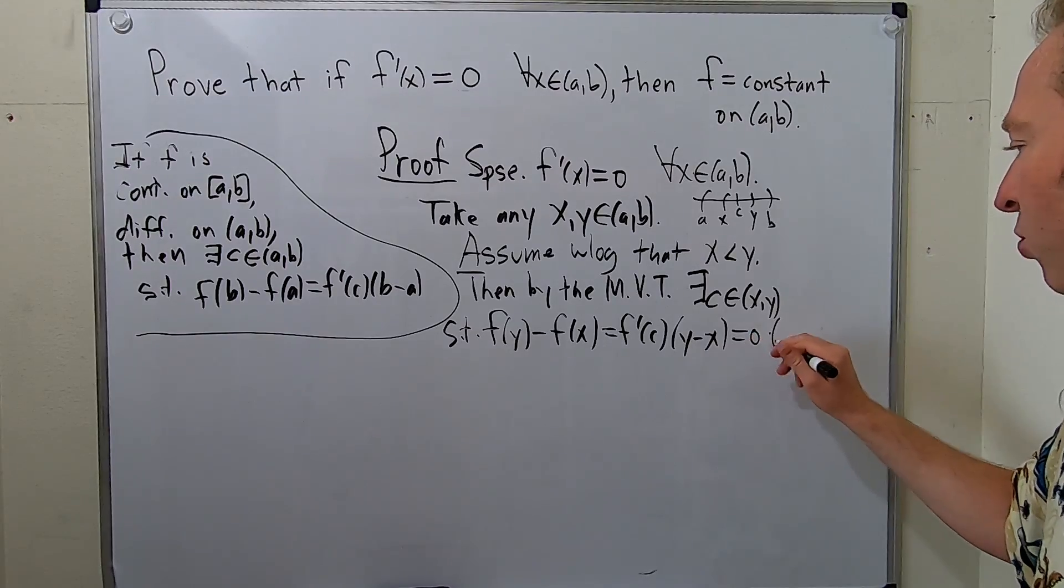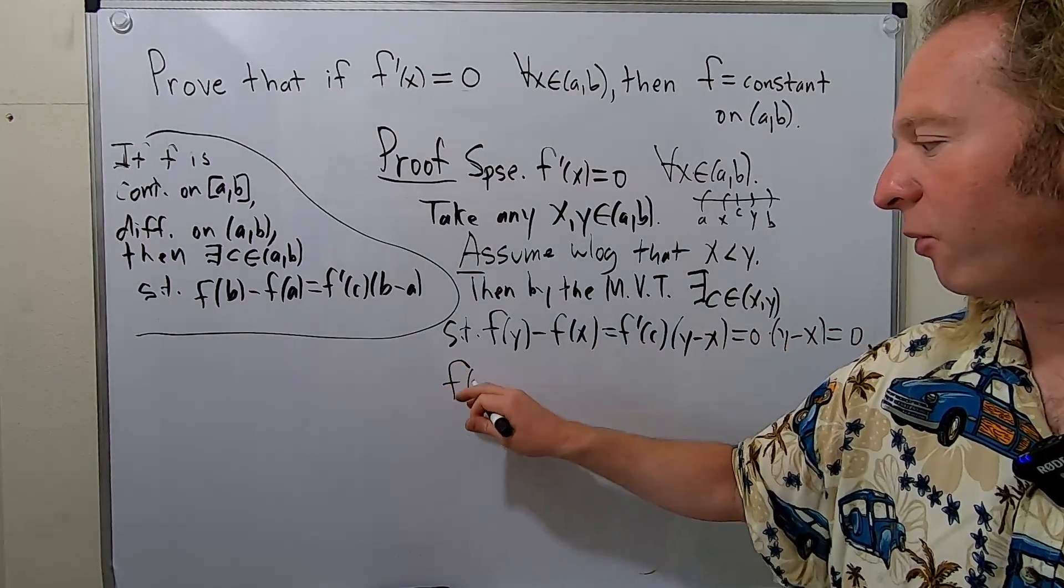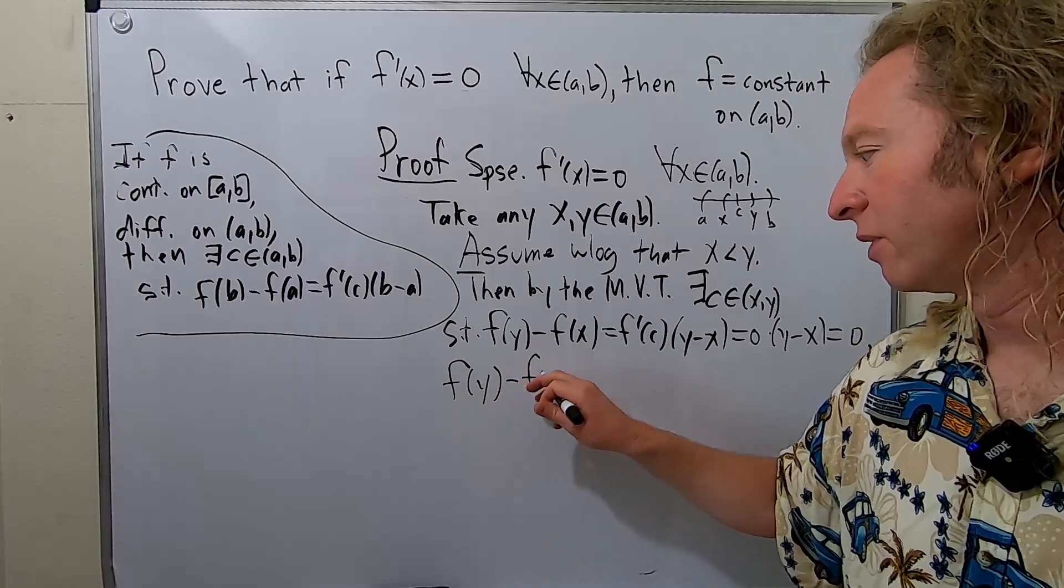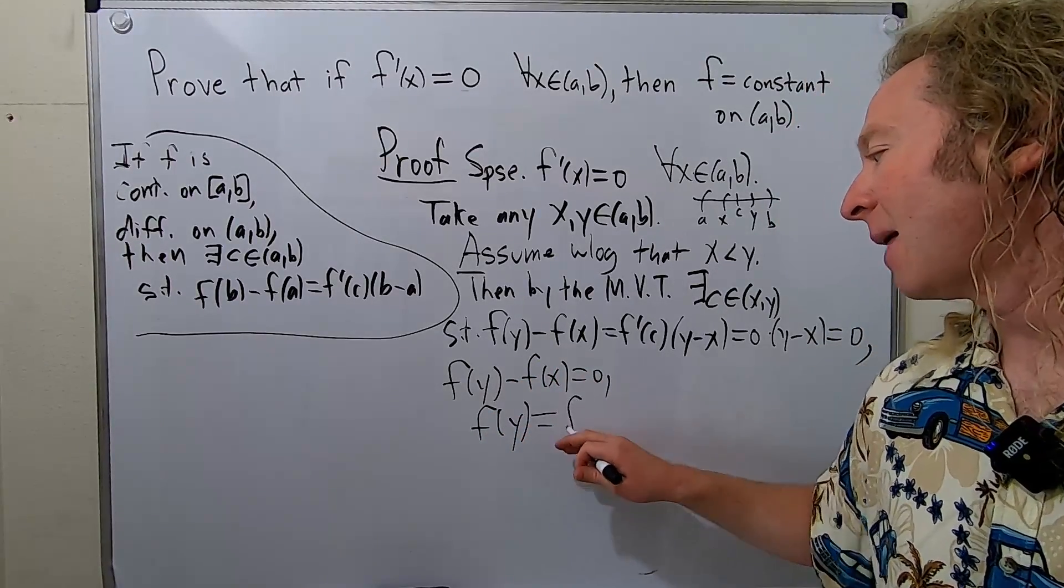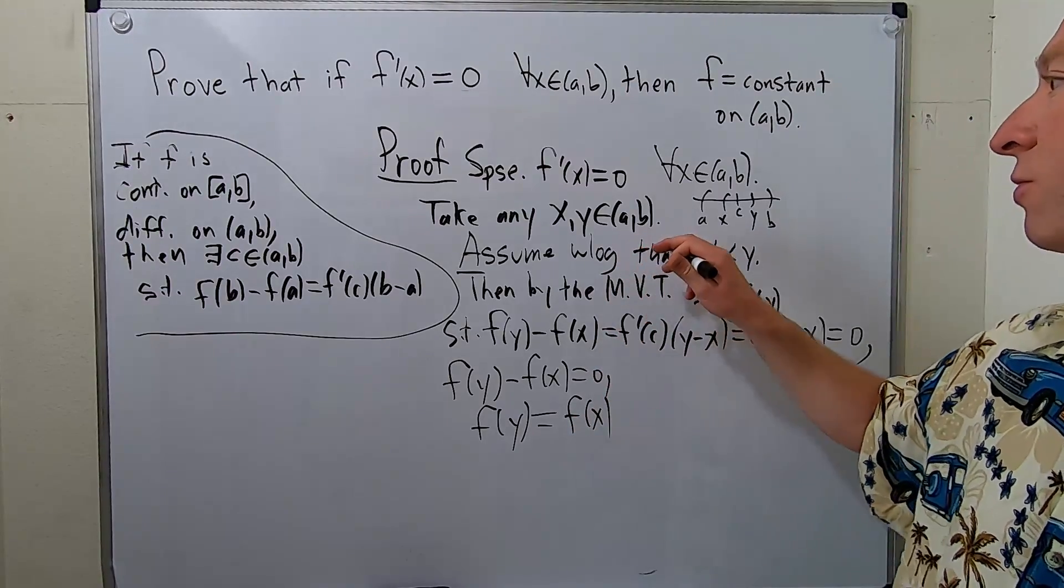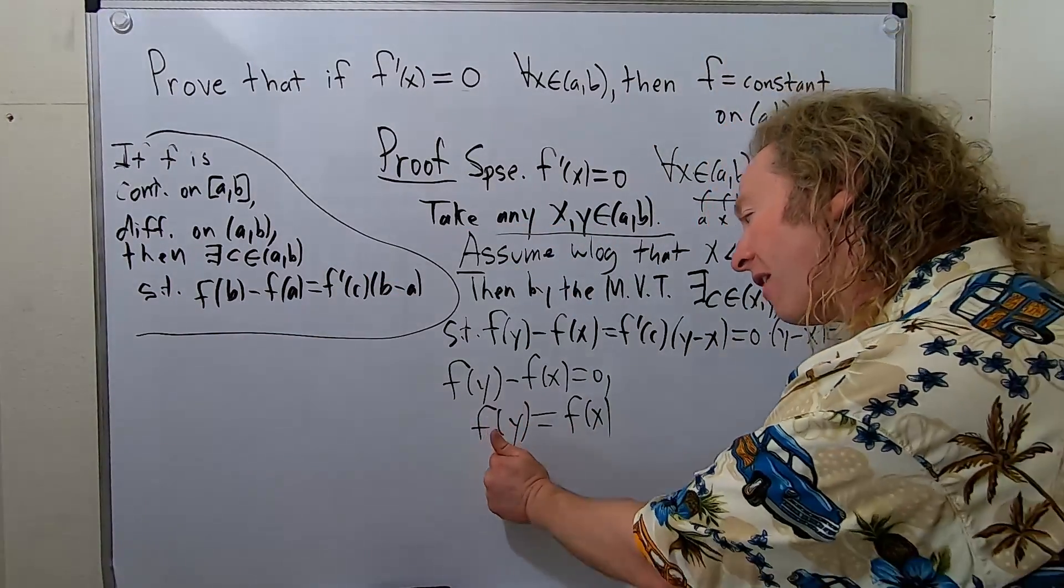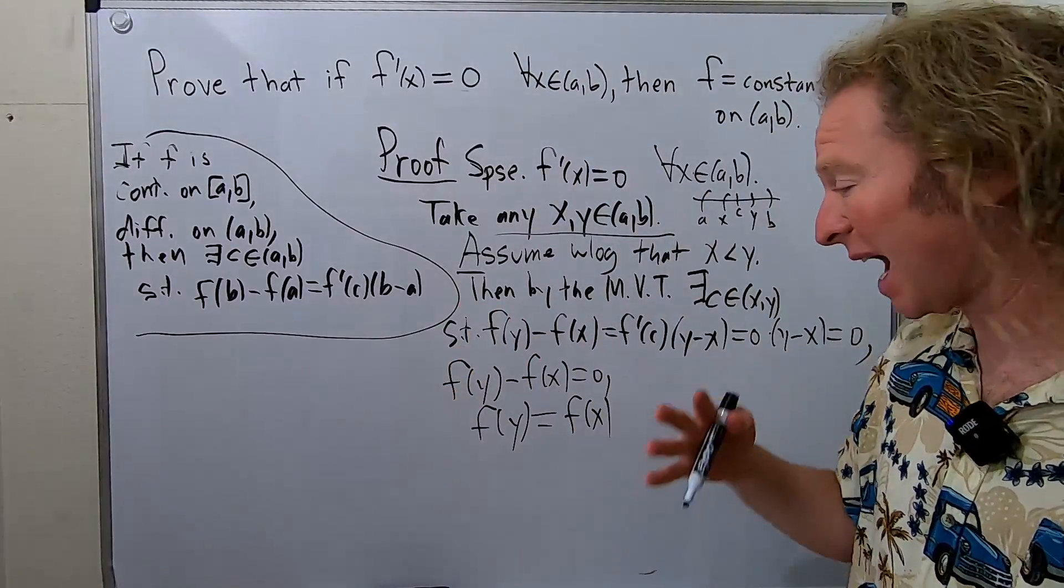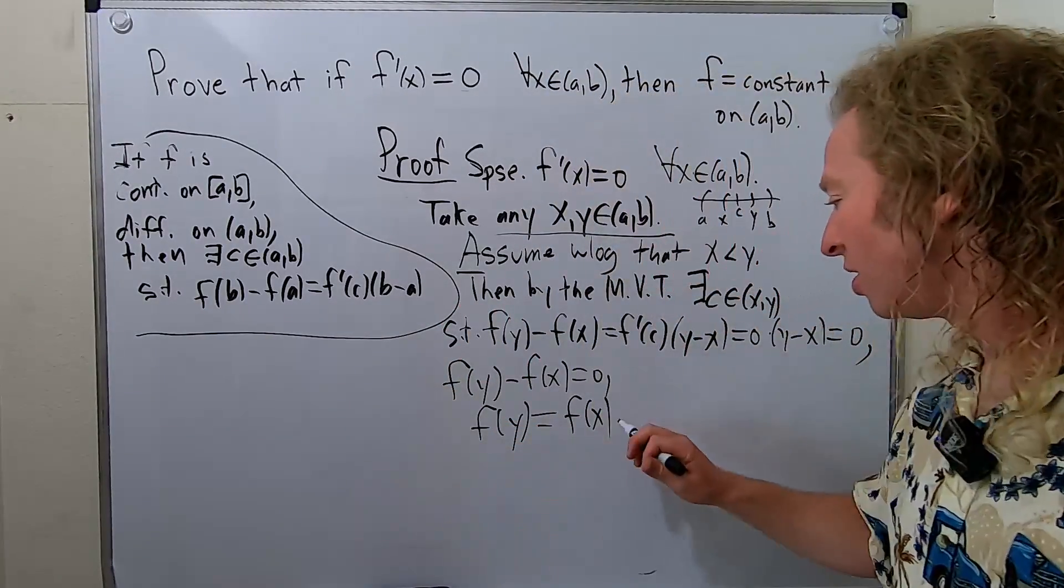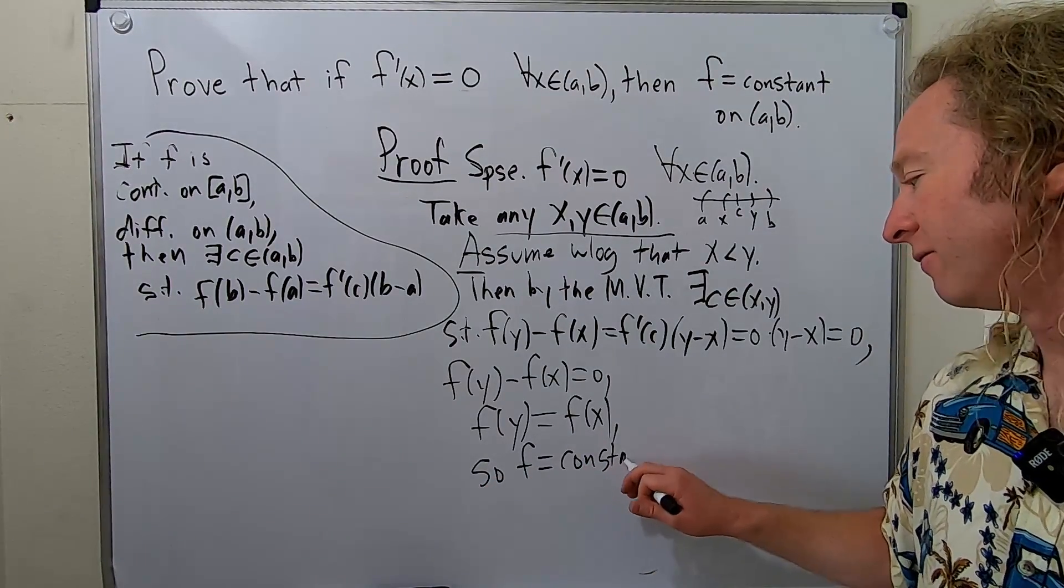So this is equal to zero times (y minus x), which is equal to zero. In particular, we have f(y) minus f(x) equal to zero. So that means that f(y) is equal to f(x). And the key point here is that this holds for any x and y in the interval. So for any x and y, f(y) is equal to f(x). Therefore, the function must be the same, right? It's got to be constant. So it doesn't change. So f is constant. So f equals a constant function.